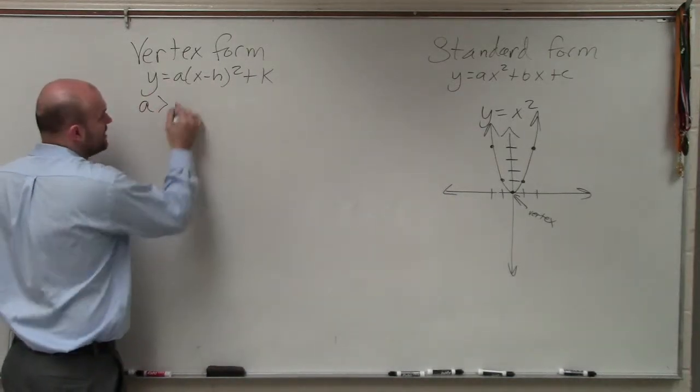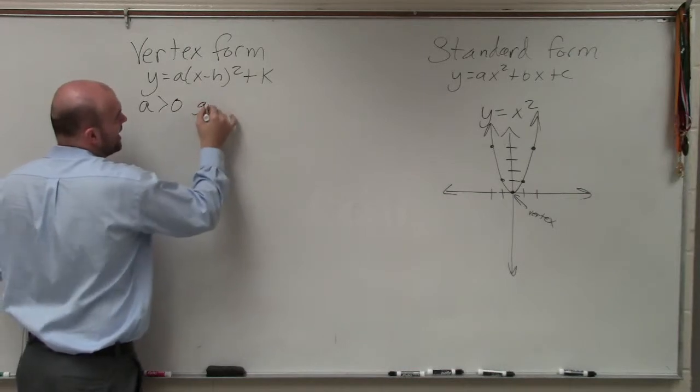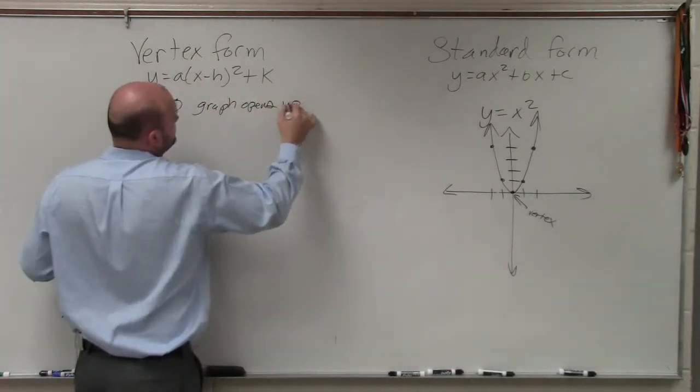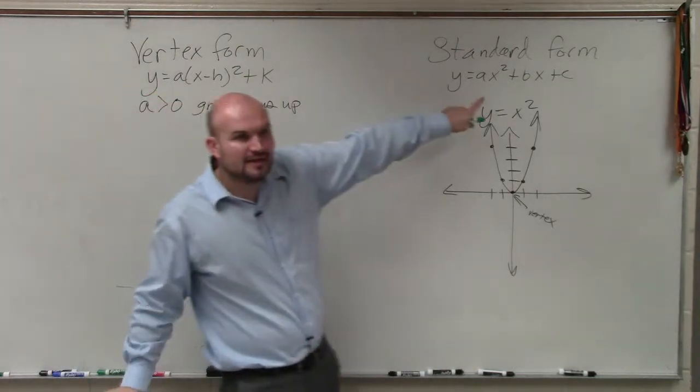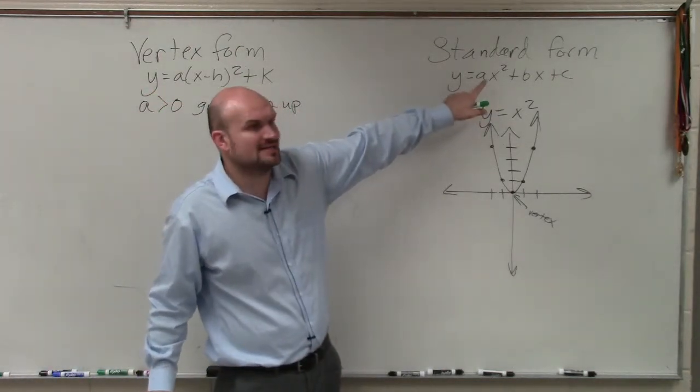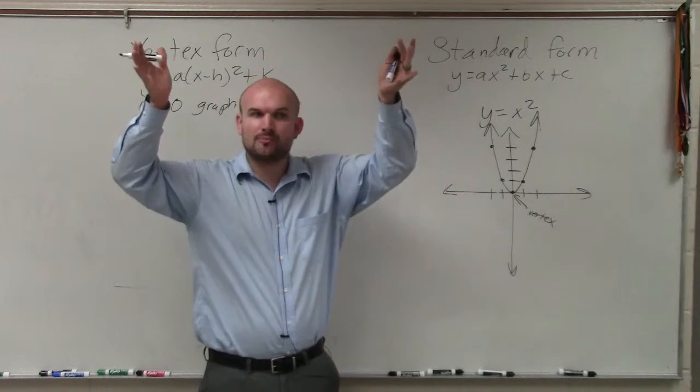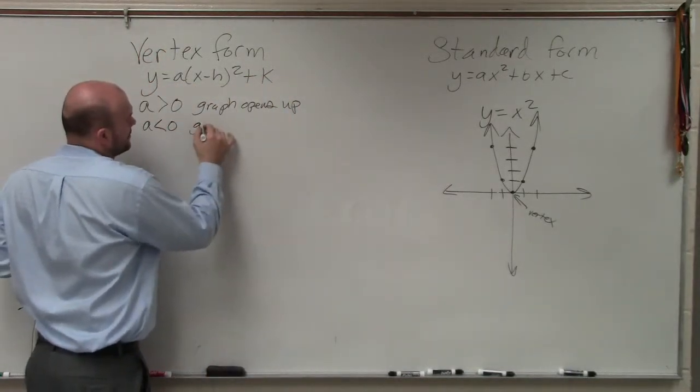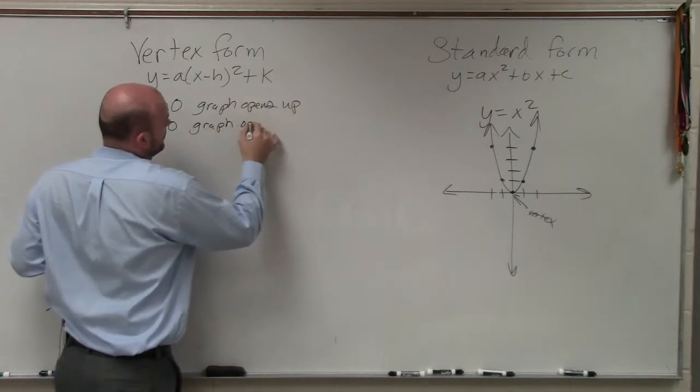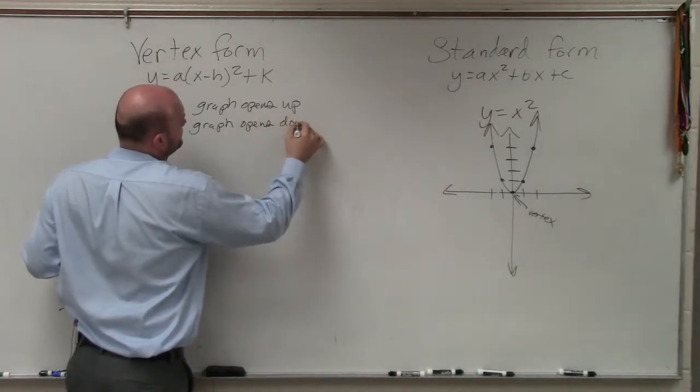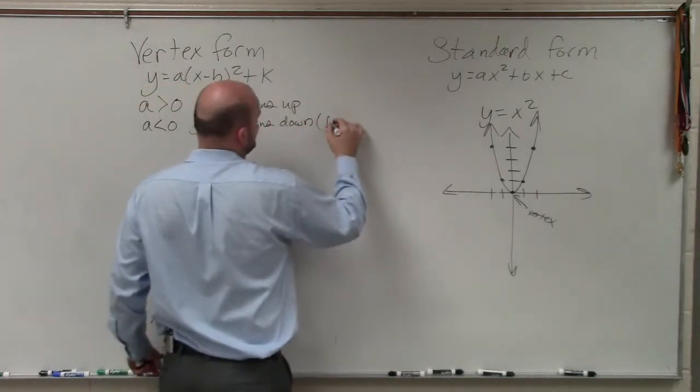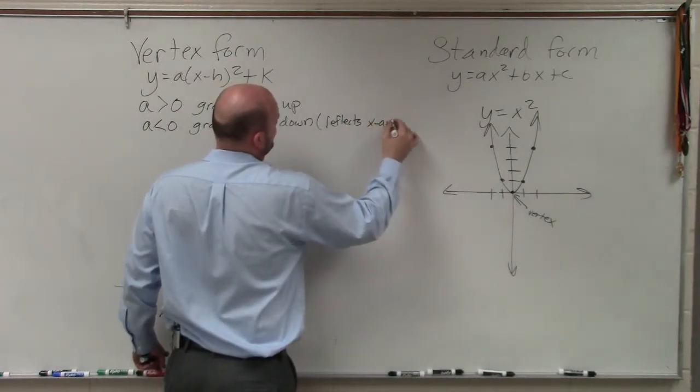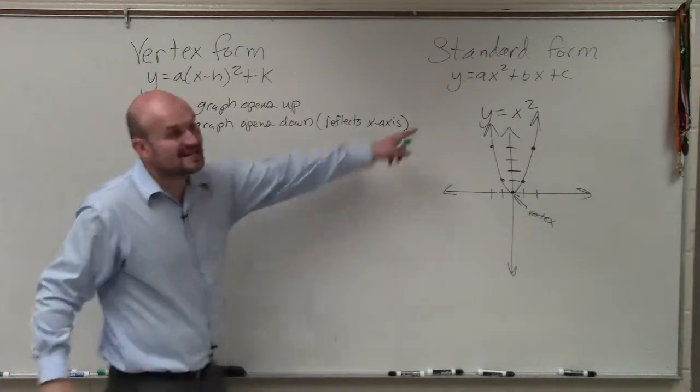So when A is greater than 0, our graph opens up. And you guys remember that. But even if you have a quadratic and A is positive, you know that that graph is going to open up. If A is less than 0, then the graph opens down.